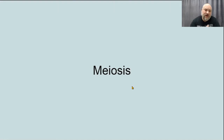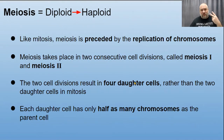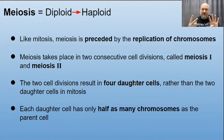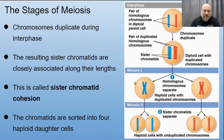Now let's talk about how meiosis halves the chromosome number. It's very similar to mitosis — we still have prophase, metaphase, anaphase, telophase, and cytokinesis — but there are a few key differences. Meiosis takes us from a diploid cell (46 chromosomes) to a haploid cell (23) in humans. Like mitosis, meiosis is preceded by chromosome replication in S phase. However, meiosis takes place over two consecutive divisions — meiosis I and meiosis II — resulting in four daughter cells rather than two identical ones, each with half as many chromosomes.